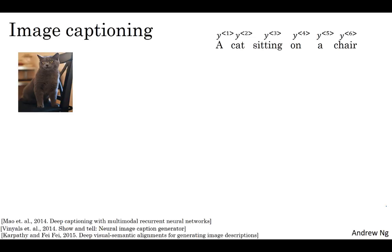And an architecture very similar to this also works for image captioning. So given an image like the one shown here, maybe you want it to be captioned automatically as a cat sitting on a chair. So how do you train a neural network to input an image and output a caption, like that phrase up there? Here's what you can do.